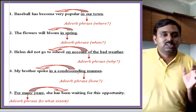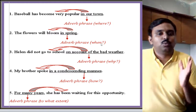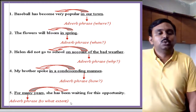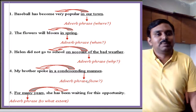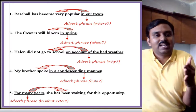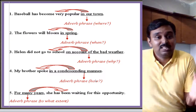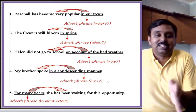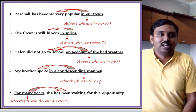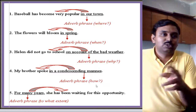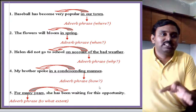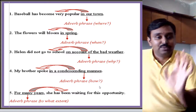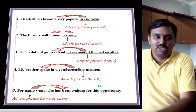So just note the point: where, when, why, how, and to what extent a particular action has happened — that is described by adverb phrases. And that is what we observe as adverb phrases. Have you got that? Now let's go to the next type, that is noun phrases.